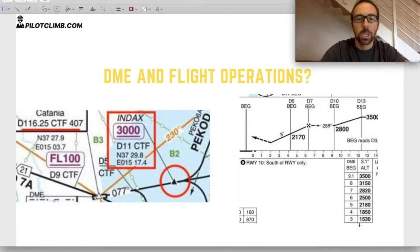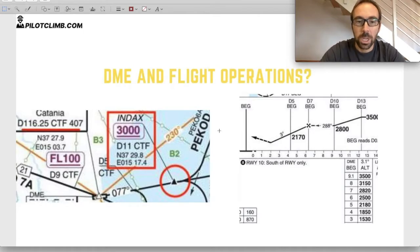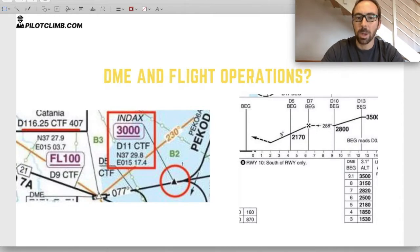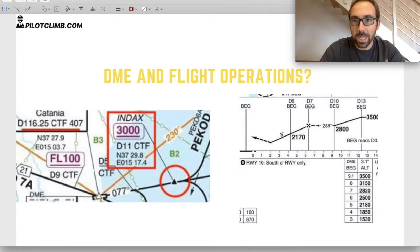So DME in flight operations. Here we've got a picture on the left which is an extract from a departure procedure out of an airport south of Italy. The black lines are the routes that aircraft flying under IFR rules have to follow to leave the airport. The aircraft has to fly from the airport down to a triangle waypoint called INDEX, and then turn left. But the problem is: how do we actually know where INDEX is on board the aircraft?